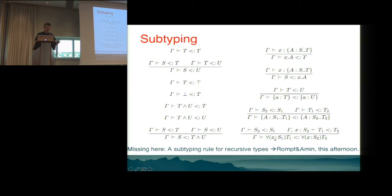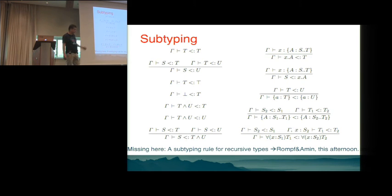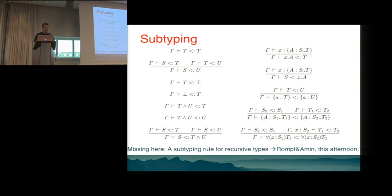One note: in this version of the calculus there is no subtyping rule for recursive types — subtyping on those is nominal only. This afternoon there will be a talk by Nada and Tiark Rompf showing how to extend the theory with structural recursive types. That requires more machinery and harder proofs, but it's not a fundamental limitation.